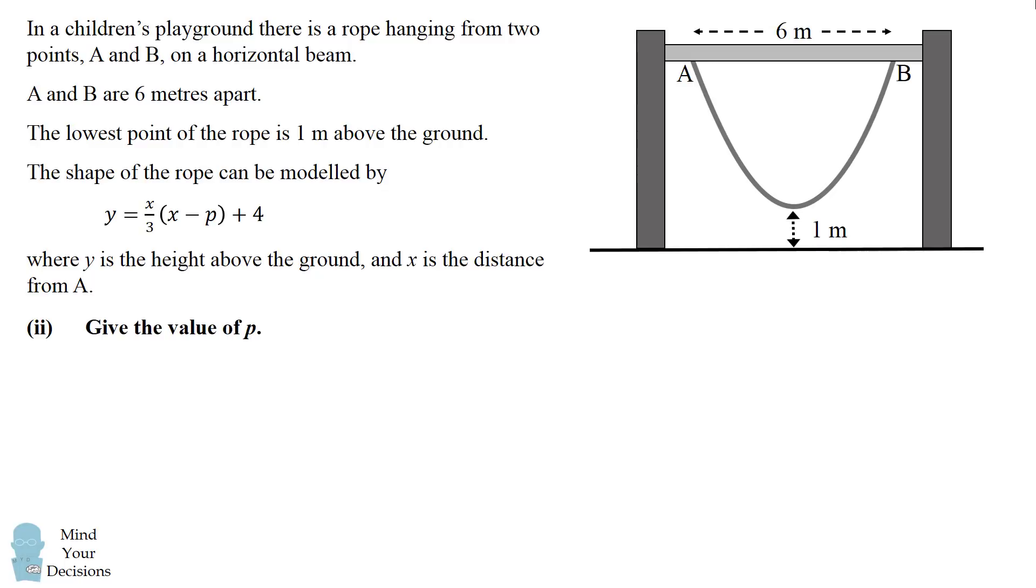Now for part 2, we need to give the value of p. Point B is x equals 6 meters from A. Furthermore, point B is the same distance off the ground as A.